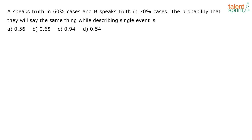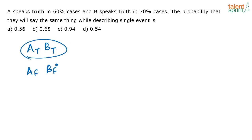It's very easy. Either both of them tell the truth or both of them say false. Both of them saying the same thing means if A is telling the truth, B also tells the truth. Similarly, if A is telling false, B also tells false. So either this case happens or that case happens — either A tells the truth and B tells the truth, or A tells false and B tells false.